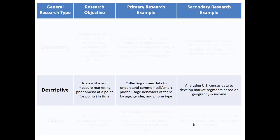Descriptive research is the type of research where your main intention is to quantify something — who, what, where, when, and how. Descriptive research is when we want specific, rigorous quantities: percentages, counts, correlations, differences in averages, and so on. As a primary research example, imagine collecting survey data to understand common smartphone usage behaviors among teens by age, gender, and phone type — for instance, do younger teens use different apps than older teens, or do iPhone users play different games than Android users? As a secondary research example, we could analyze U.S. Census data to develop market segments based on geography and income.